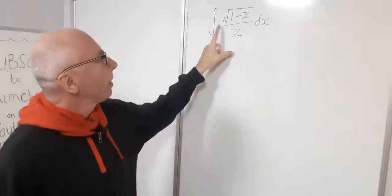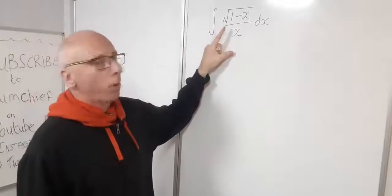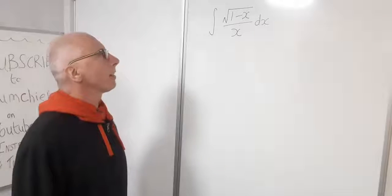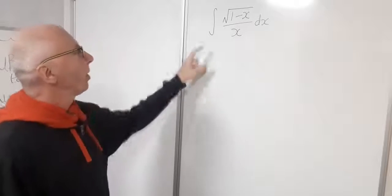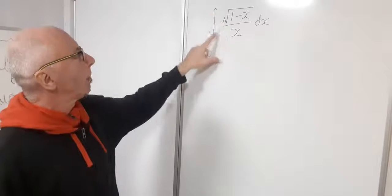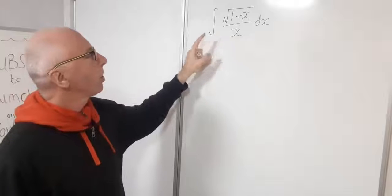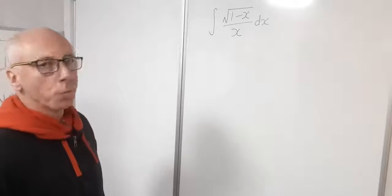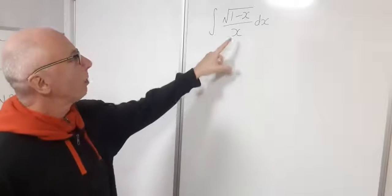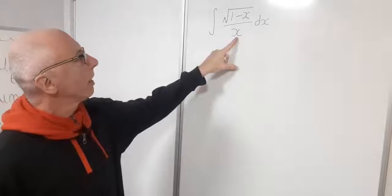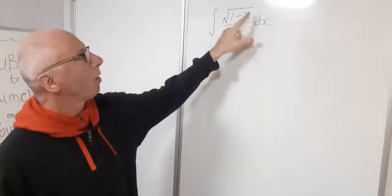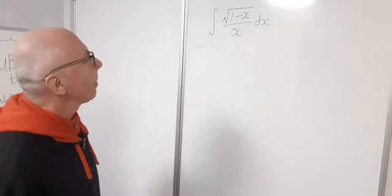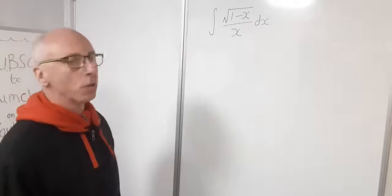We've got an integral here: the square root of 1 minus x divided by x, with respect to x. We have no parameters of integration, so it's just an indefinite integral. With an x in the denominator and a square root of 1 minus x in the numerator, it's definitely looking like a u-substitution.